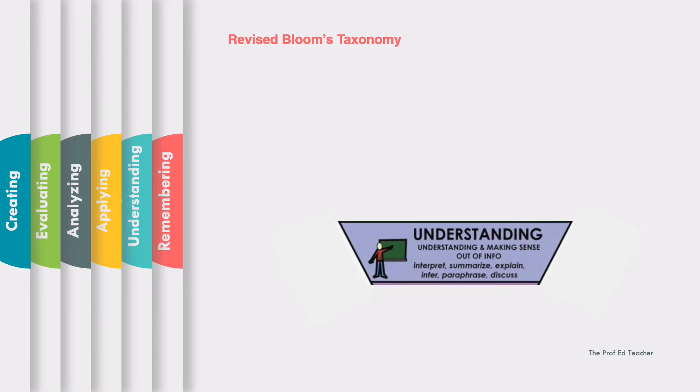We move to the next level, and that is understanding. This is where the student understands and makes sense of the information given to them. The verbs that we can use are the following: interpret, summarize, explain, infer, paraphrase, and discuss. We can ask questions like what is the main idea, how would you summarize, explain the process of, or discuss how. In this level, students will be asked to interpret facts that they learned.